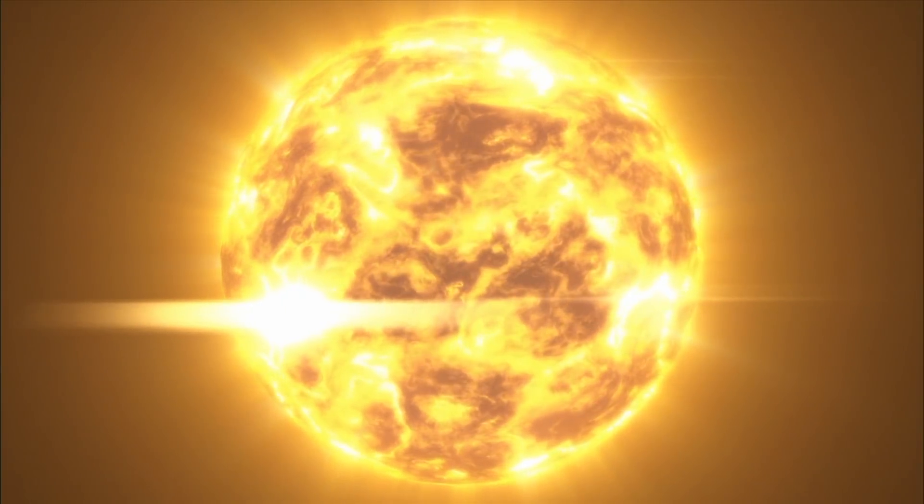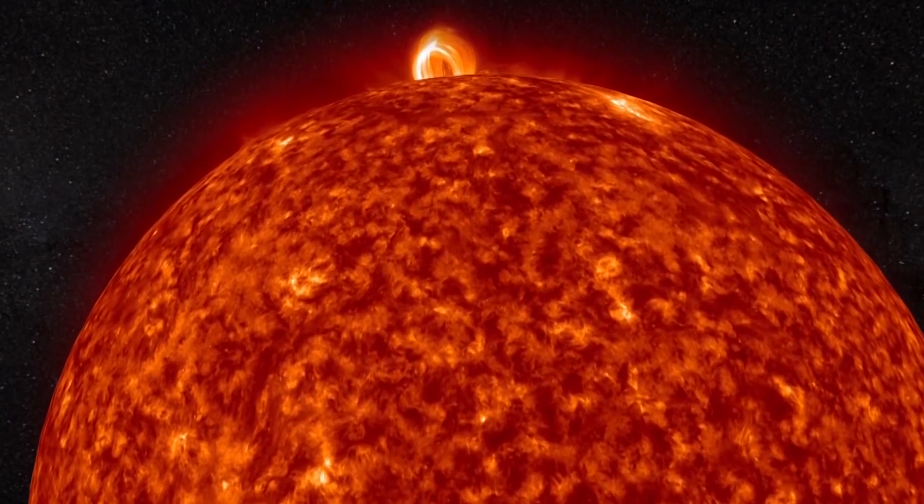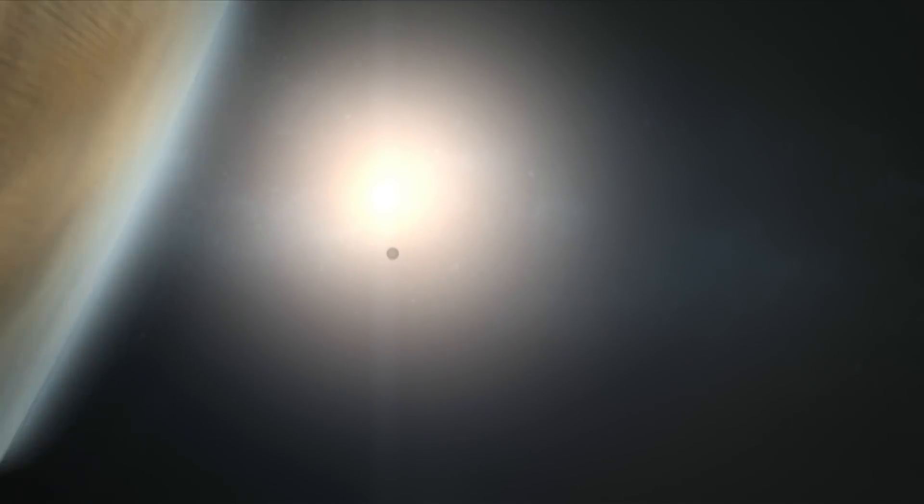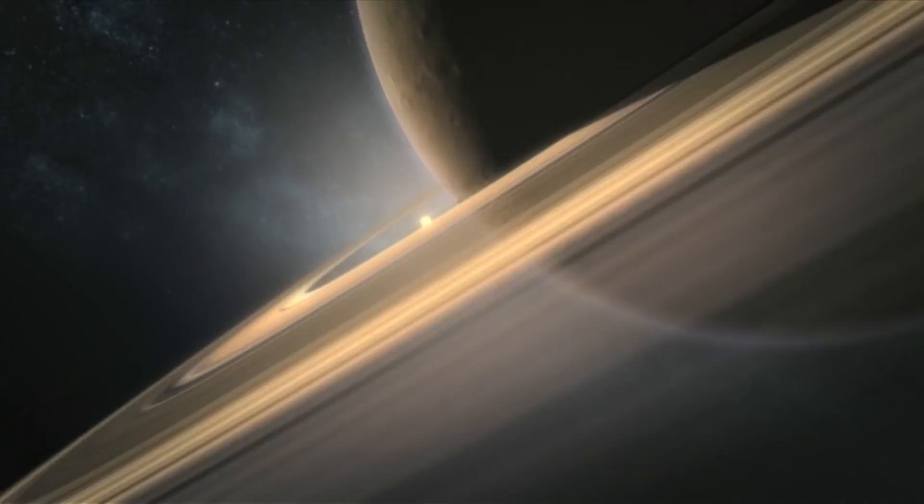The Sun, the heart of our solar system, is a yellow dwarf star, a hot ball of glowing gases. Its gravity holds the solar system together, keeping everything from the biggest planets to the smallest particles of debris in its orbit.